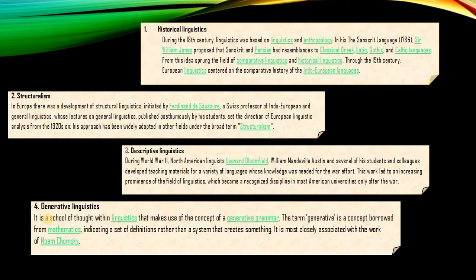Historical Linguistics during the 18th century was based on linguistics and anthropology. In his work on Sanskrit language, Sir William Jones in 1786 proposed that Sanskrit and Persian languages have resemblances — similarities — with Classical Greek, Latin, Gothic, and Celtic languages, having words of the same origin. From this idea, the field of comparative linguistics and historical linguistics emerged.